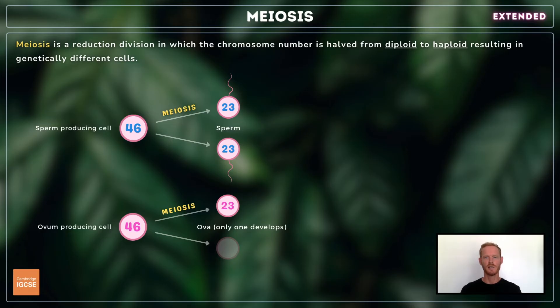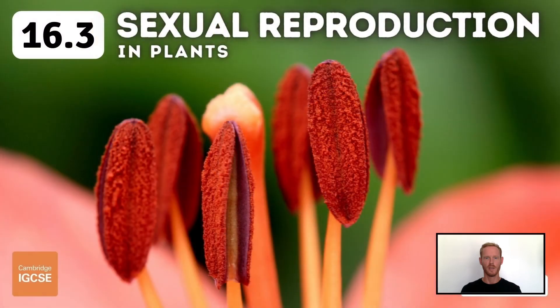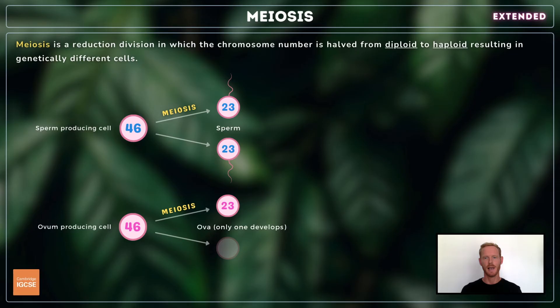Meiosis is involved in the production of gametes, and therefore occurs in the testes and ovaries in mammals, and in the anthers and ovules of flowering plants. For more on this, check out my video on topic 16.3. Gametes, unlike other cells, are haploid, meaning they have half the normal number of chromosomes.